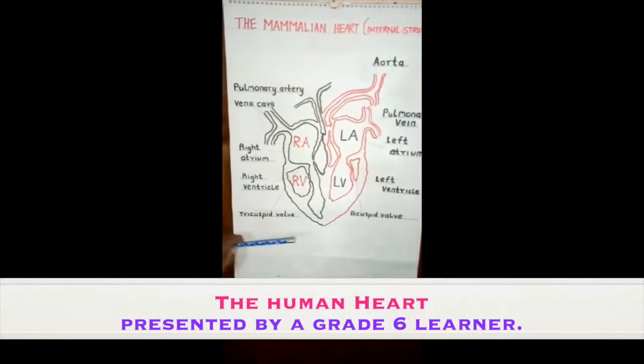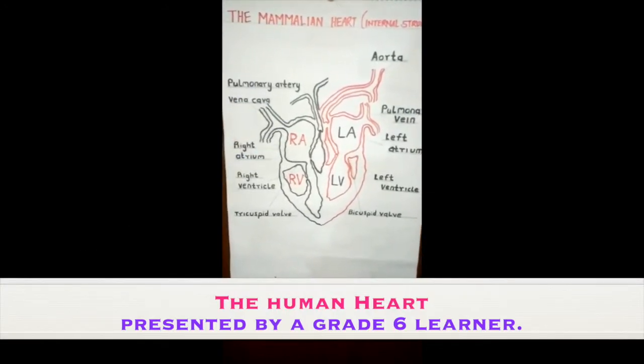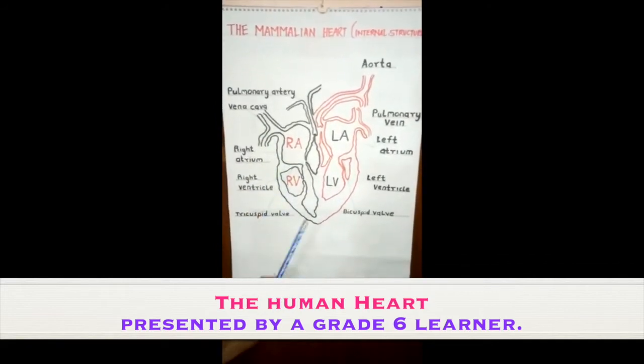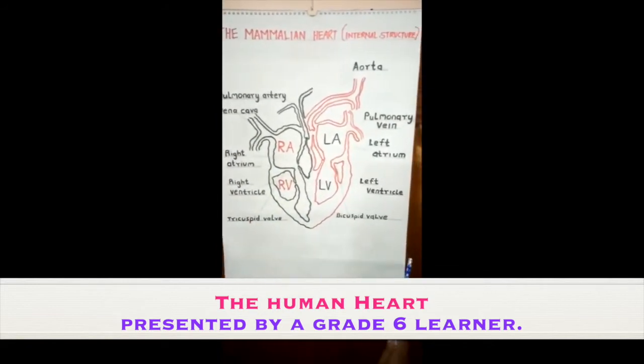On the right side, we're going to discuss the pulmonary artery, the vena cava, right auricle, and the right ventricle.